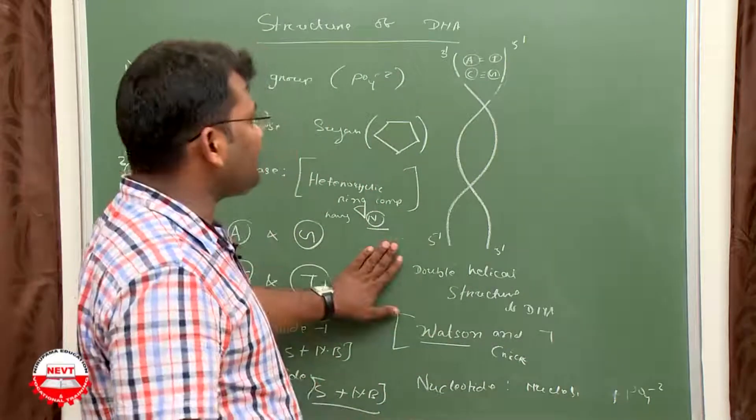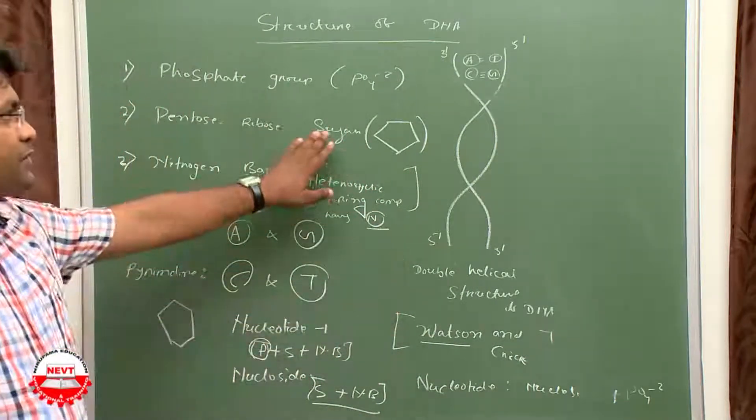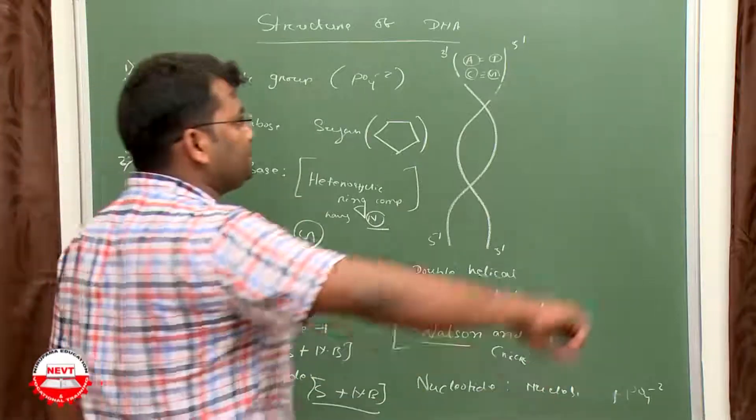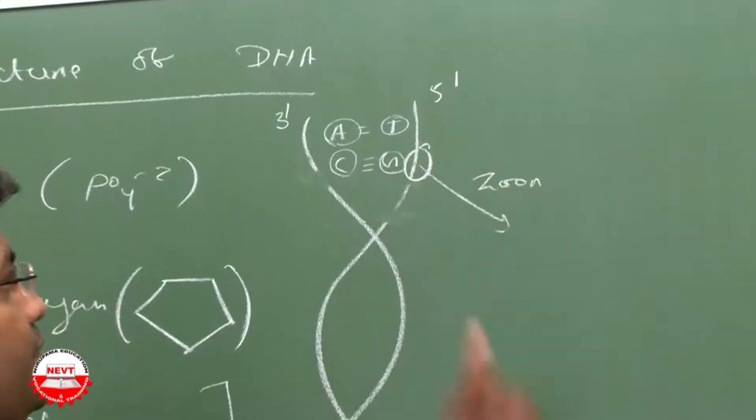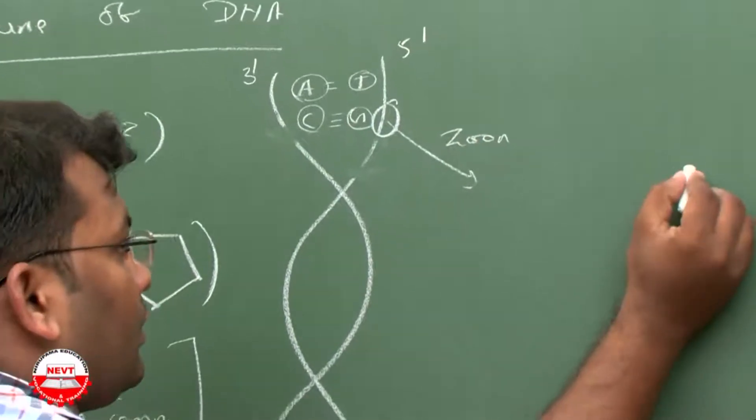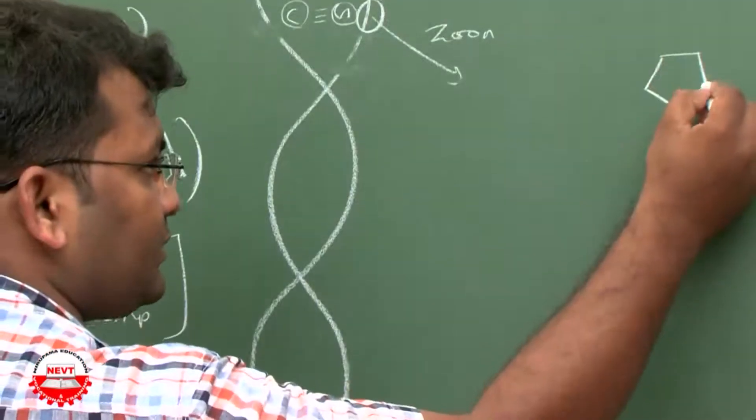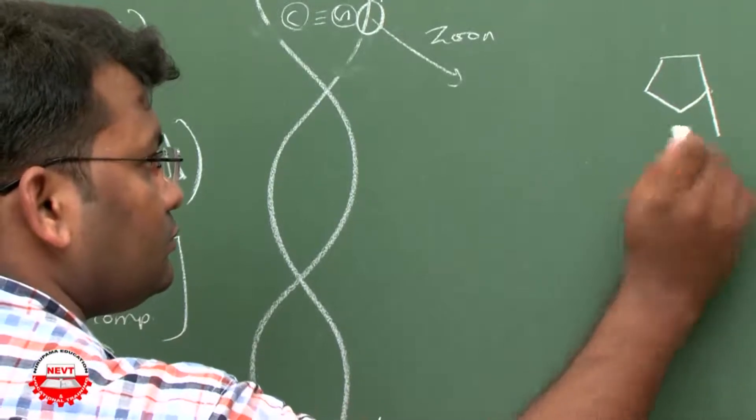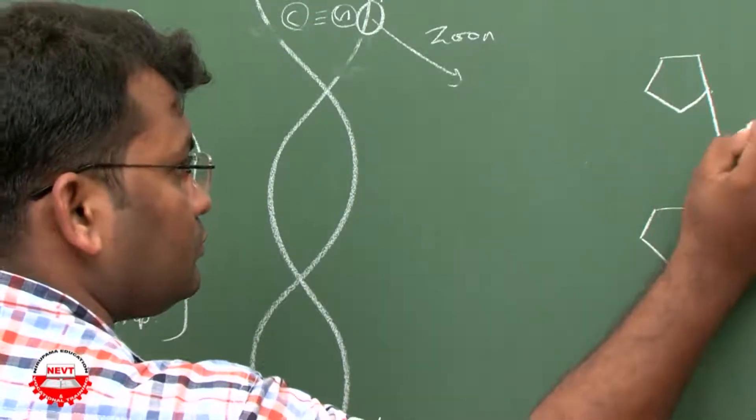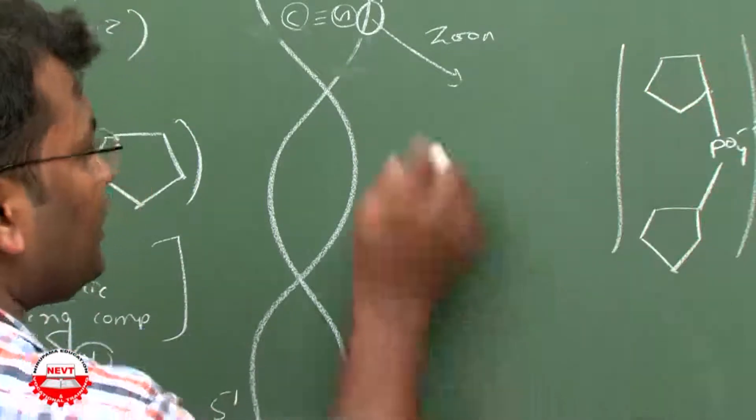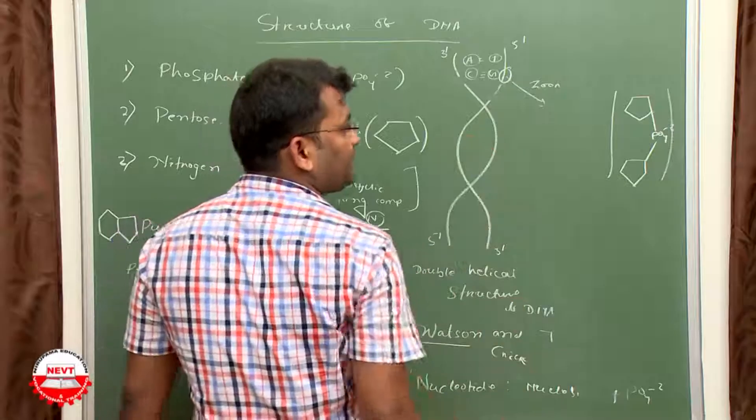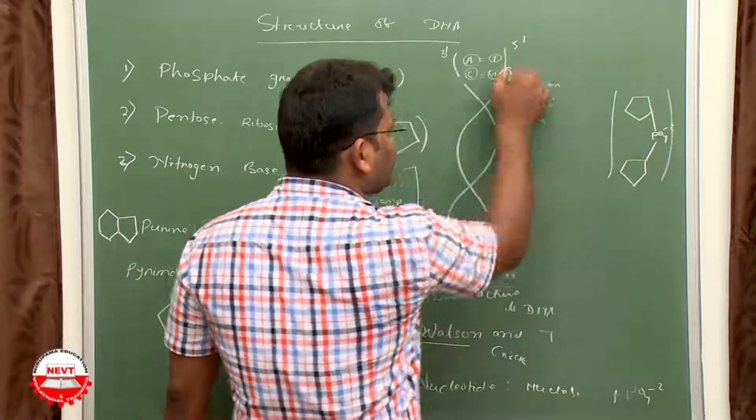How are the nitrogen bases, phosphate group, and sugar aligned? Sugar molecules are being linked by phosphate groups, and those are the part of this strand. Sugar and phosphate make the strand.